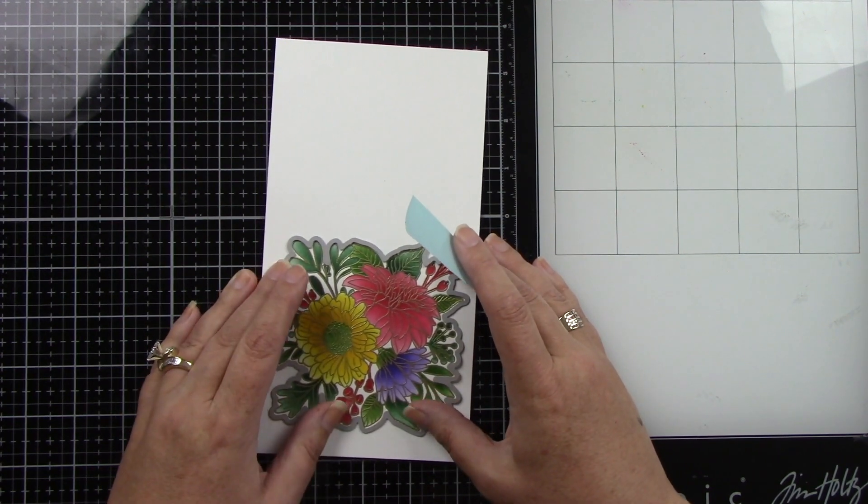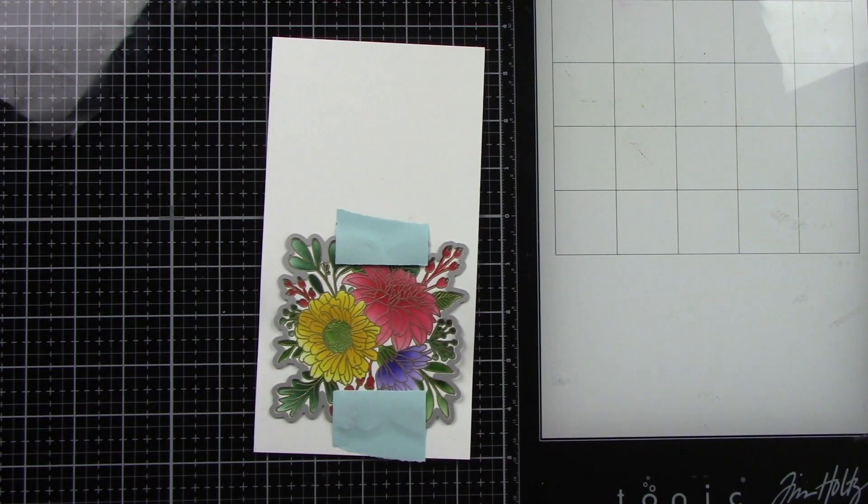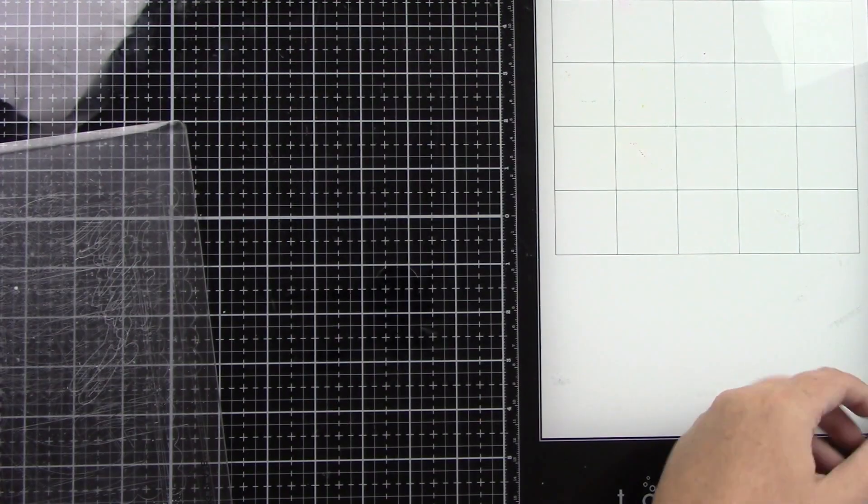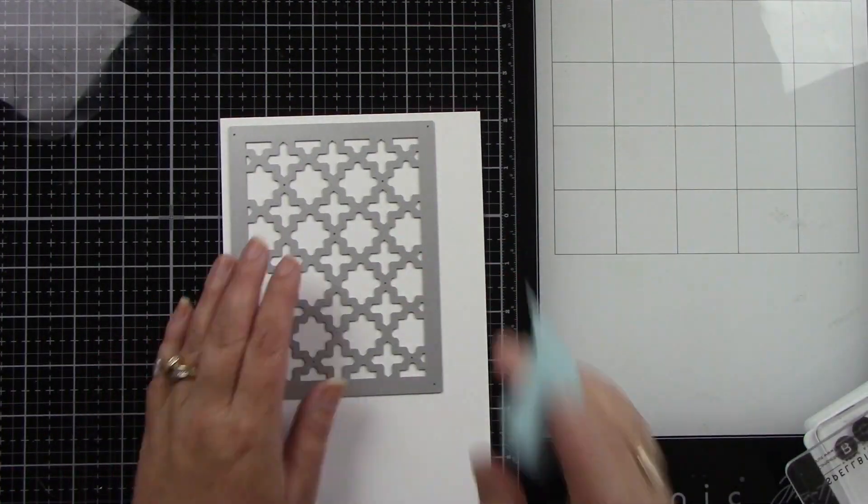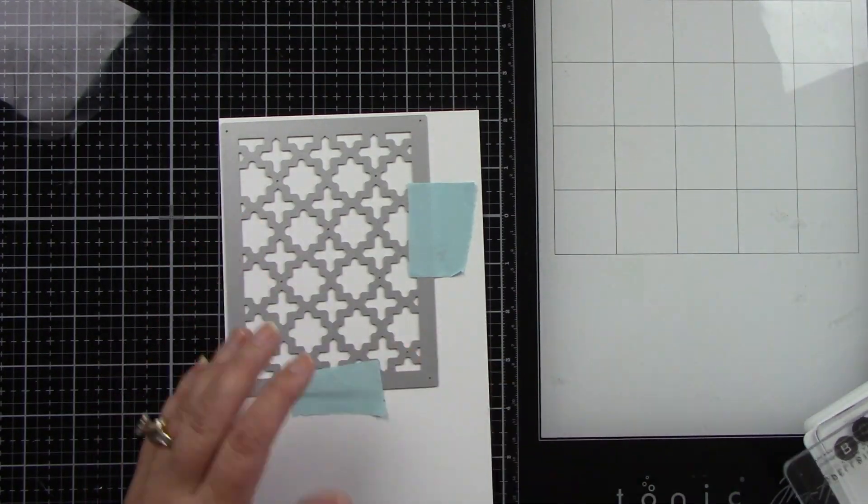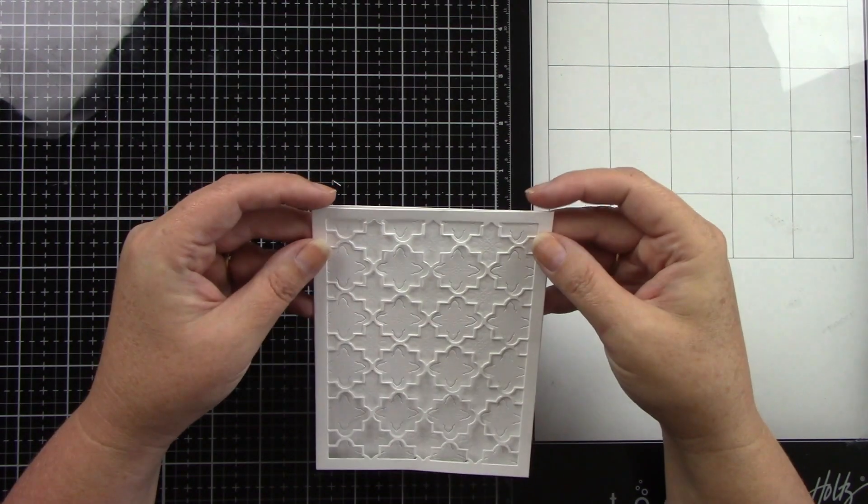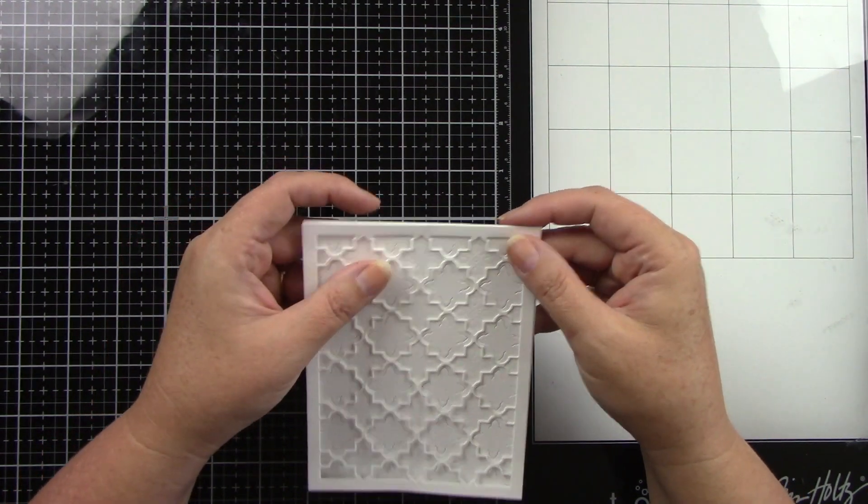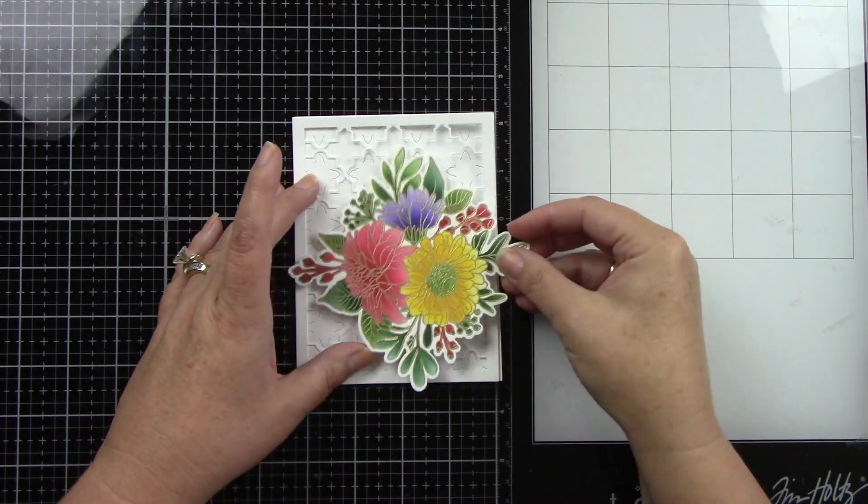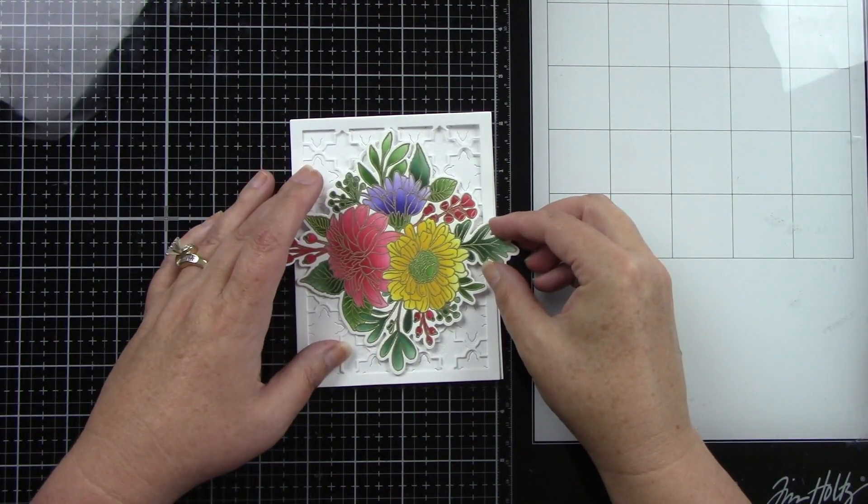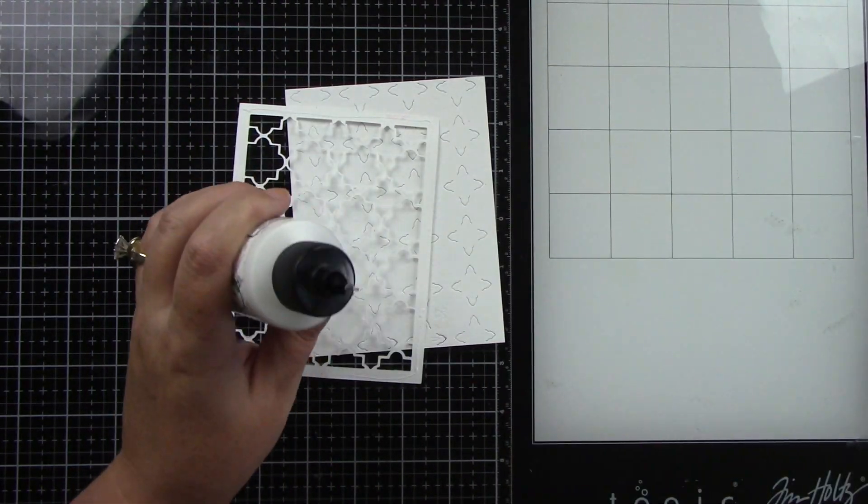Then we can start on the background. I'm using the Ornate A2 Cover Plate Top and Base. I'm going to die cut both of those from white cardstock. Here's the top piece, so pretty. The bottom piece is just little embossed lines. You just lay it over like this and then you can adhere it down. I kept it white because the image is just so colorful. We're also going to do a little trimming of that big piece that we stenciled.